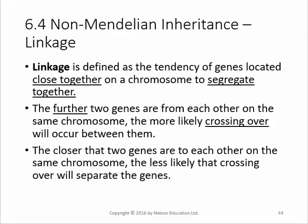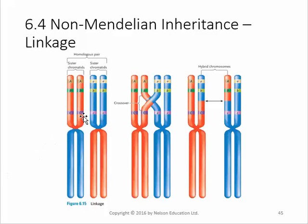Another idea is linkage — genes that are on the same parts of a chromosome segregate together. For example, blonde hair and blue eyes tend to segregate together because the genes are linked on the same chromosome. The closer the two genes are to each other on the chromosome, the less likely they will cross over and separate. So if gene A, gene B, and gene C are on a chromosome and they cross over, A and B will go across together but C will separate from them — that's the only way that separation can happen.